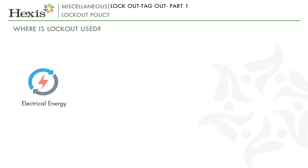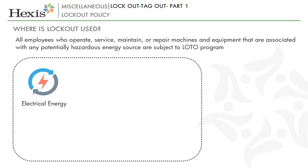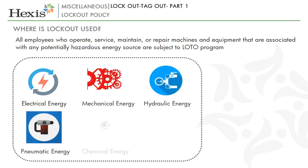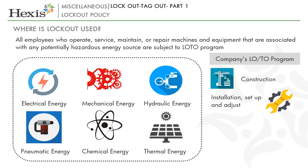Let us now see when lockout should be used. All employees who operate, service, maintain or repair machines and equipment associated with any potentially hazardous energy source — i.e. electrical, mechanical, hydraulic, pneumatic, chemical, thermal, gravity, radiation — are subject to one or more elements of the company's LOTO program. These include constructing, installing, setting up, adjusting, inspecting and repairing works.